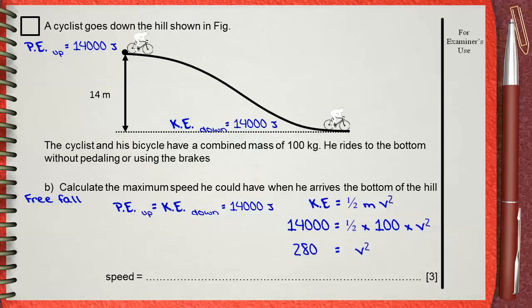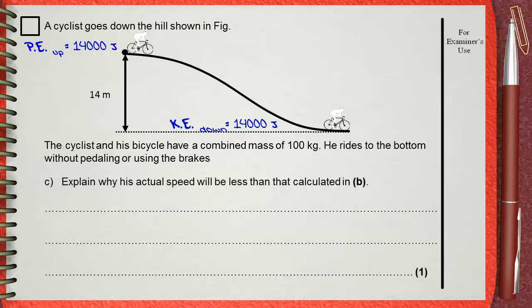Taking the square root of both sides, v equals the square root of 280, which is 16.7 meters per second. Of course, this is assuming a free fall case — no pedaling, no brakes, and no friction. Question C: explain why his actual speed will be less than that calculated in part B.